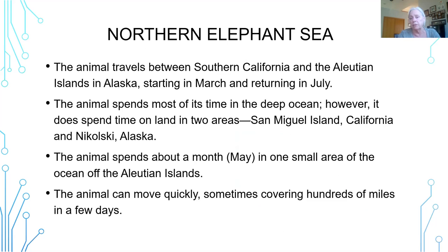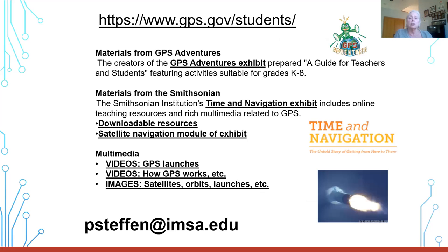It ends up being the northern elephant seal. Students can collect their evidence and explain why they think their pattern matches a particular animal. It's pretty obvious by the when and where this animal spends time during the year, and they can quickly find out it's the northern elephant seal. I hope you'll take a look at this series of lessons — I think there's something in there for people from all over the country. Students need to know a little bit about the technology they use every day. Please contact me at pstefan@IMSA.edu if you have additional questions. Thank you very much for your time.